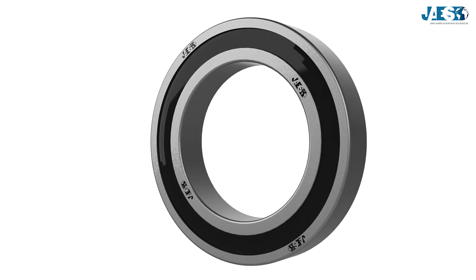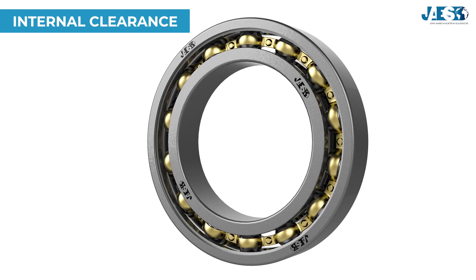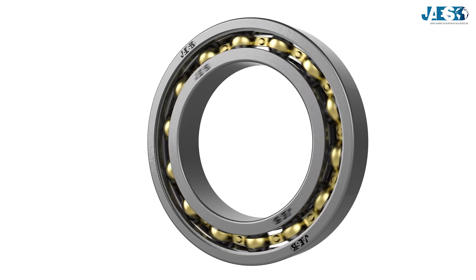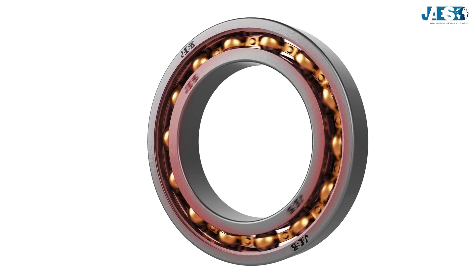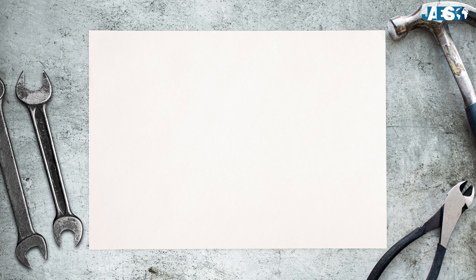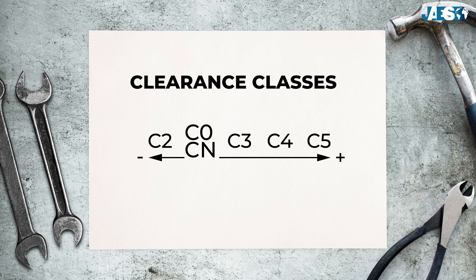Another easily found suffix is the internal clearance. The internal clearance of bearings indicates the radial or axial displacement between the rings, which is necessary for the correct rolling of the parts, so that deformations during assembly or thermal expansion during operation do not affect the life of the bearing. The various classes are usually identified by codes such as C2, C0, C3, C4, or C5. On the scale, C0 or CN denotes normal internal clearance, C2 denotes lower clearance, while C3, C4, and C5 represent larger clearances than C0.